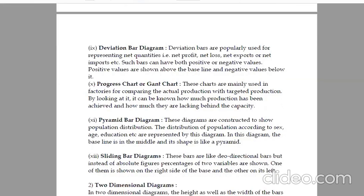There are three parts more: Progressive chart or Gantt chart, parameter by diagram and sliding bar diagram. These are the three next points. You can see here.